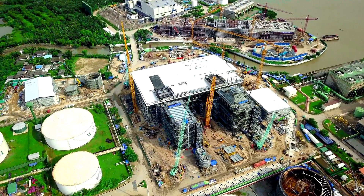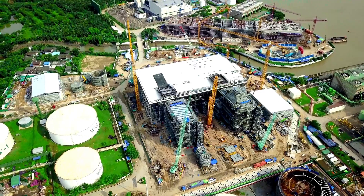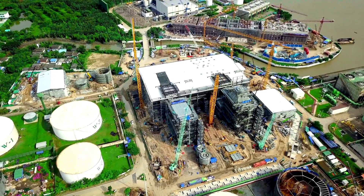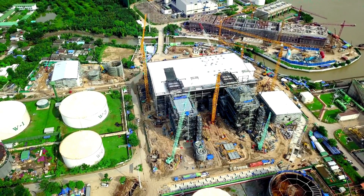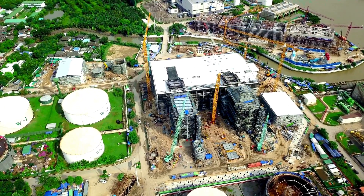Depending on the form of contract, the contractor is almost always accountable for delivering the project's scope in the agreed-upon time frame. The terms in the contract relating to time are there to ensure there is a clear allocation of responsibilities to ensure the contract works are completed on time. The principal needs to ensure the contractor's time-based responsibilities are clearly defined.